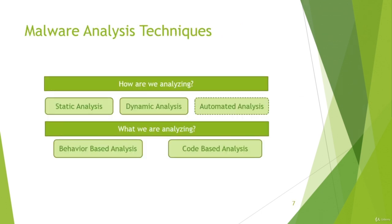What malware analysis techniques are used? We can divide techniques by how we analyze and what we analyze. There are mainly two types: static analysis, where you do not execute the code, and dynamic analysis, where the main concept is to run the code and interact with it. Automated analysis depends on third-party vendors who already have expertise and tools to do the analysis for you.